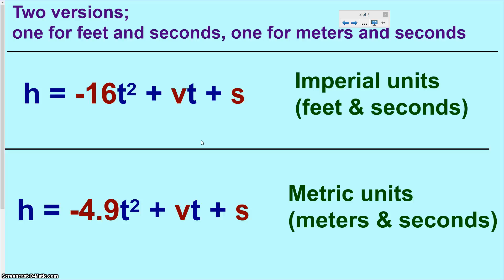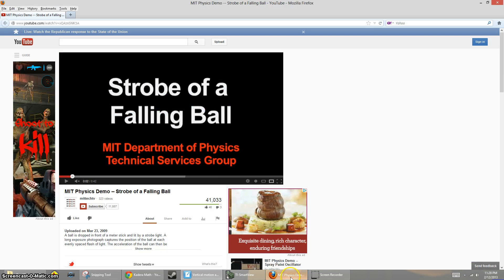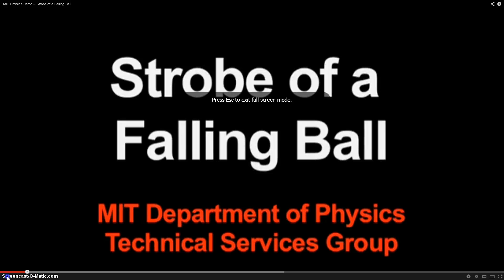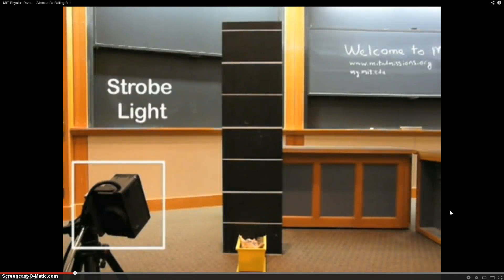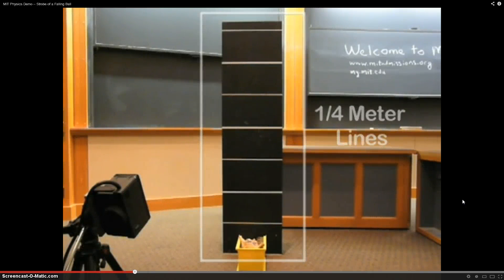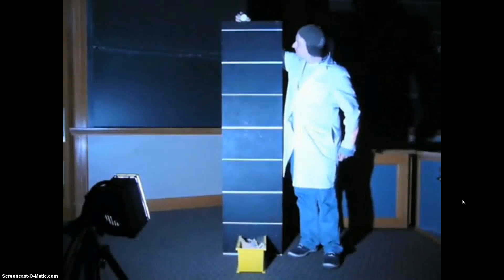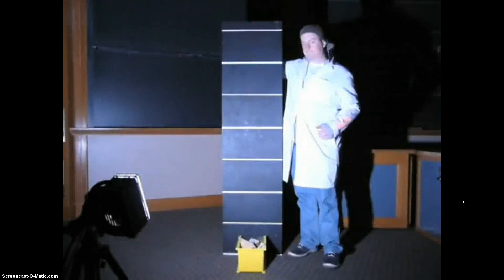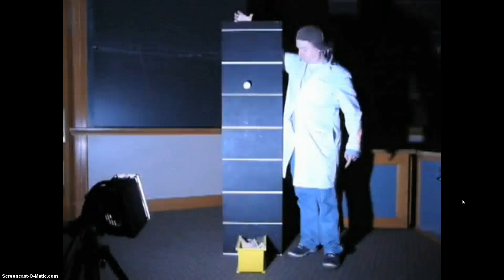But that's not how objects fall. If something falls for the first second, it won't go very fast. But during the second second, it will fall much faster — faster and faster the longer it falls. MIT has an excellent demonstration of this in a YouTube video. They have a strobe light flashing against a backboard with quarter-meter marks, and a lab assistant drops a ball in front of the board while the strobe light flashes, taking a picture every time it goes off, played back in slow motion.